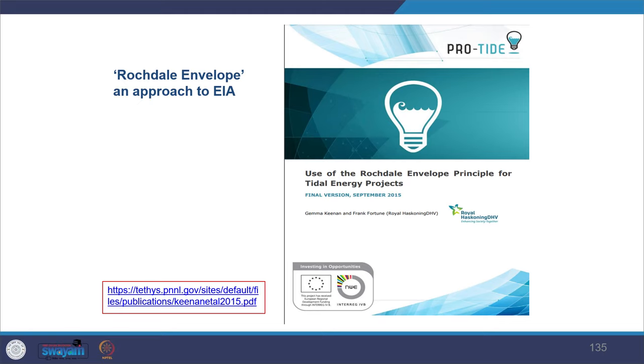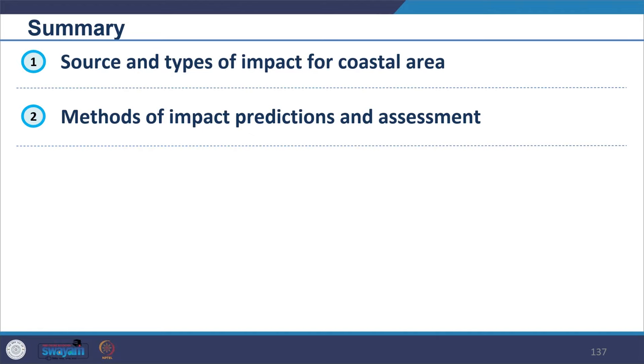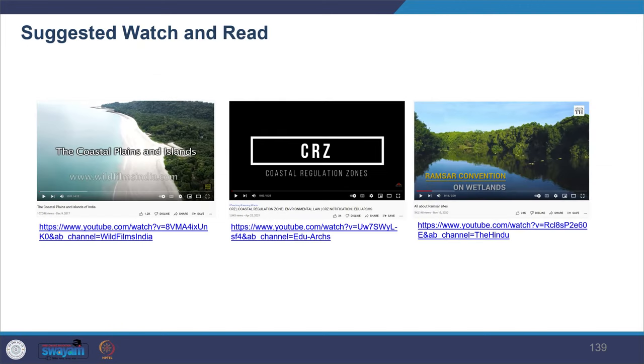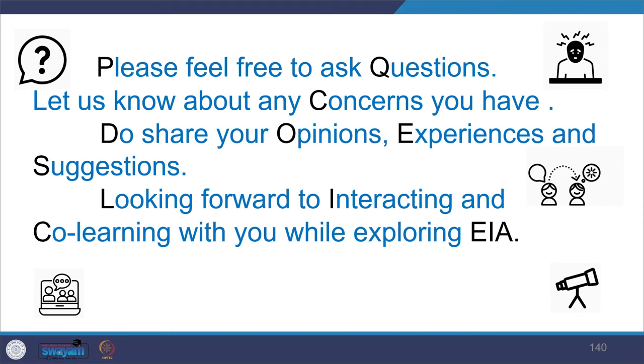In summary, today we covered the sources and types of impacts for coastal areas, methods for impact prediction and assessment, how to assess impact magnitude and significance, and the sensitivity of receptors. The key reference is chapter 7 from Therivel and Wood's textbook. Suggested readings and videos covering phenomena and cases that could not be discussed in detail have been provided, and you are encouraged to ask questions and share opinions and experiences in co-learning.